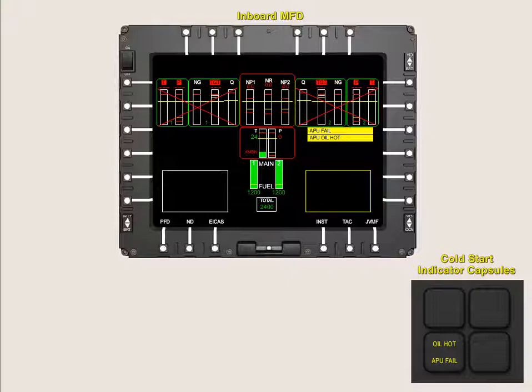The APU oil hot caution appears and the oil hot capsule on the upper console will illuminate when APU oil temperature is above normal range. During ground operations at high ambient temperatures, the APU oil hot caution may appear and the oil hot capsule may illuminate. If this occurs, the APU should be shut down immediately to prevent damage because the ESU will not automatically shut the APU down for this condition.